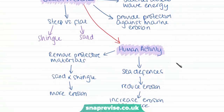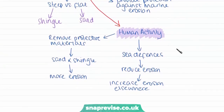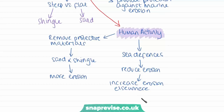Lastly, we have human activity. Humans can protect coastal environments by erecting sea defences, which tend to reduce erosion in a specific area, but as a side effect can increase erosion elsewhere. Humans can also negatively affect beach environments by removing protective materials such as sand and shingle, which can cause increased beach erosion.